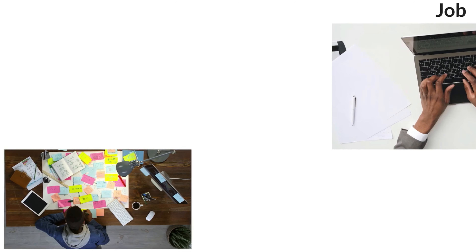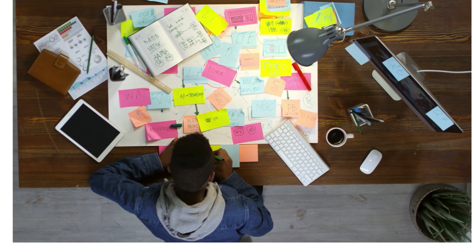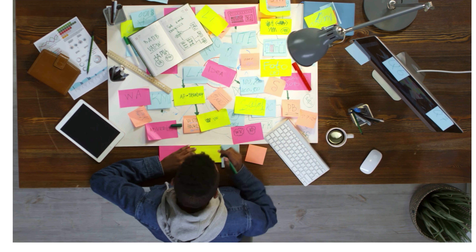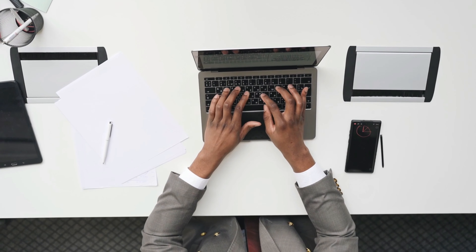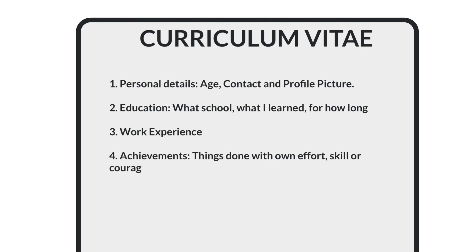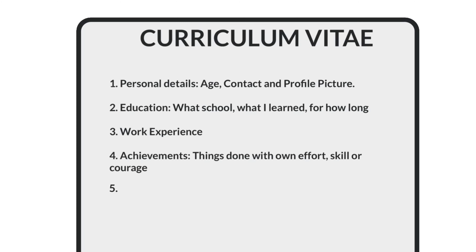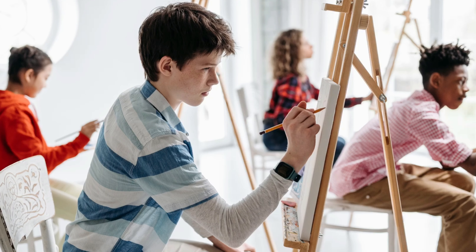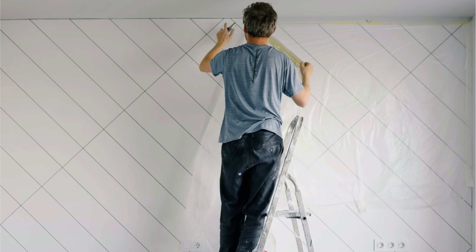So when you have worked on a job that prepared you for the one you want to do now, you should focus on that one mostly. Number four is achievements — the things that you have done successfully with your own effort, skill, or courage. Number five, you should explain what your skills and abilities are — what talents you have that help you do the job well.